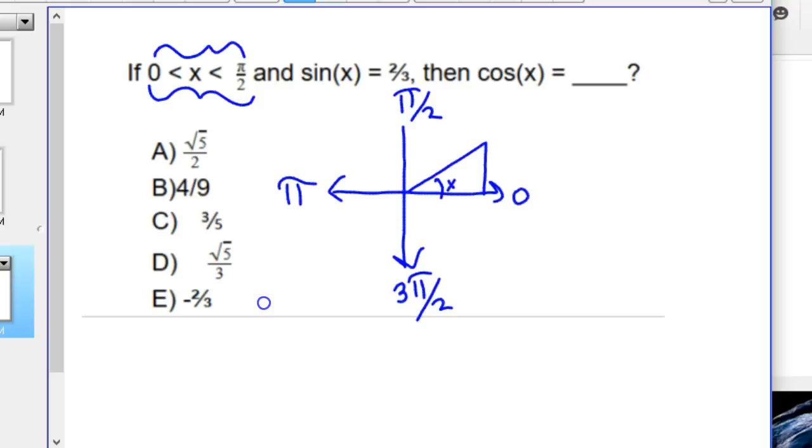And, my reference angle is x. And so, it says sine x equals 2 thirds. Well, again, you want to use the SOHCAHTOA. That thing is incredibly handy. And so, we're dealing with sine opposite over hypotenuse. And, again, here's my 90 degree angle. My hypotenuse is 3. My opposite is 2. And, we're going to need to find cosine, which is adjacent over hypotenuse.